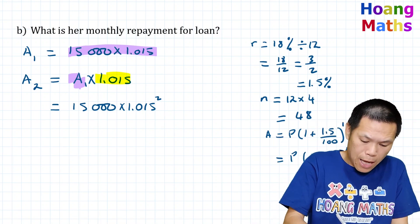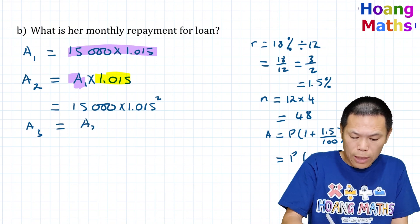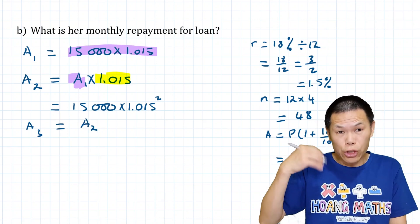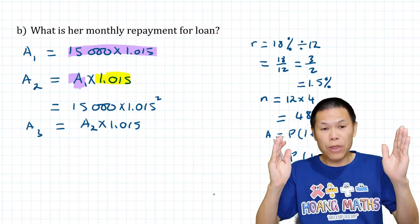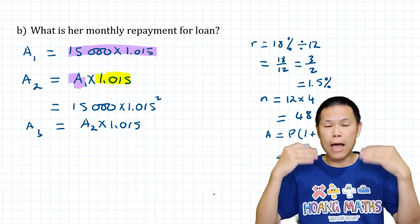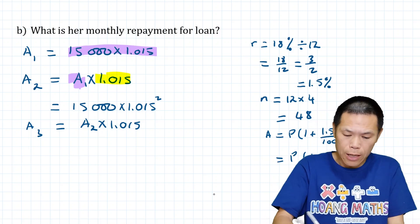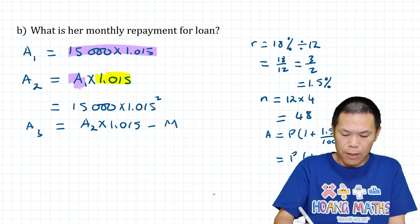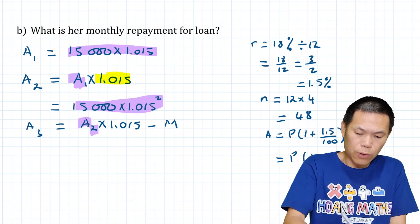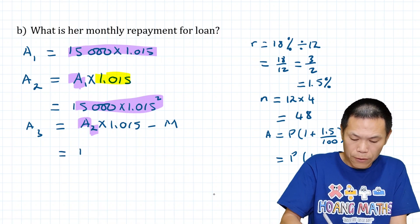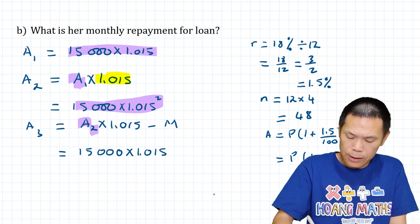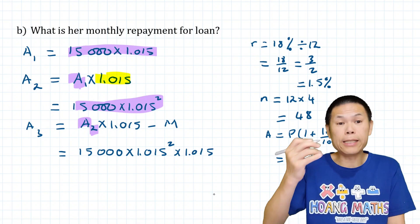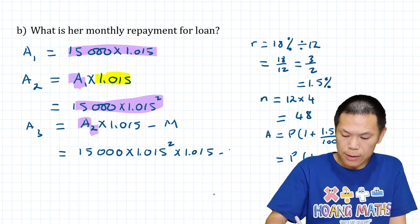At the end of the third month she owes A2 plus interest, but now she also starts paying back the loan. So A3 = A2 × 1.015 − M, where M is the regular monthly repayment. Substituting A2, we get A3 = 15,000 × 1.015^2 × 1.015 − M.